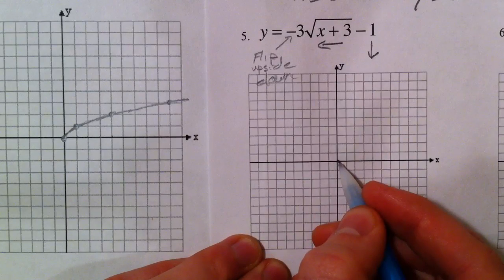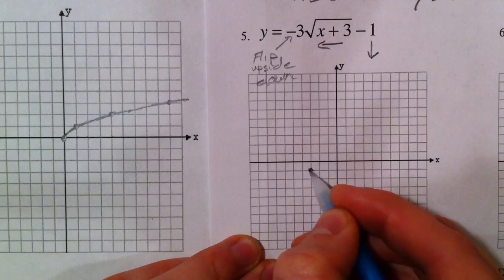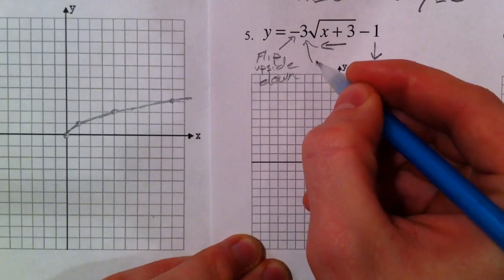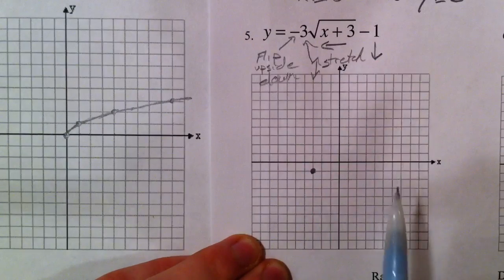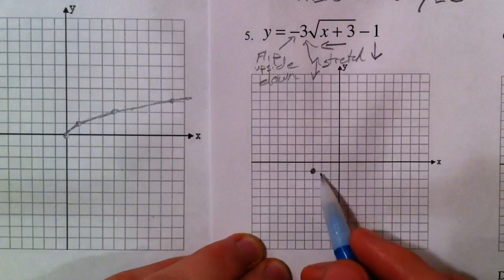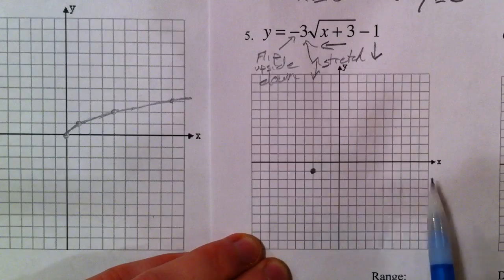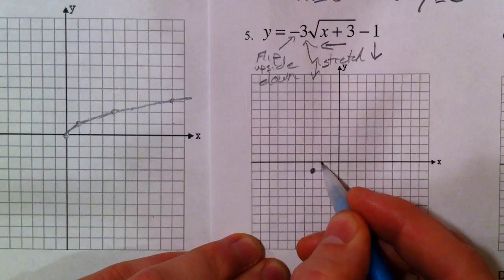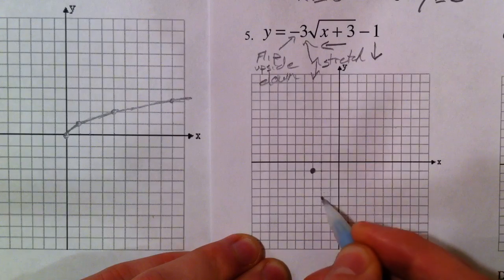This negative out front is going to flip it upside down — rather than growing upward it flips down. So we go to the left three and down one for our starting point. The three out front is a vertical stretch by three. We're back to square root, so we deal with inputs of one, four, and nine. Normally we go right one and the square root of one is one, but we multiply by negative three, so we go down three instead.